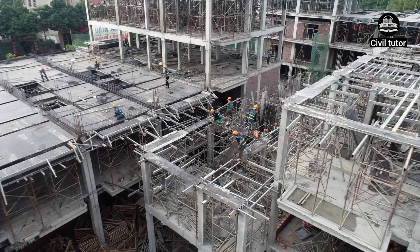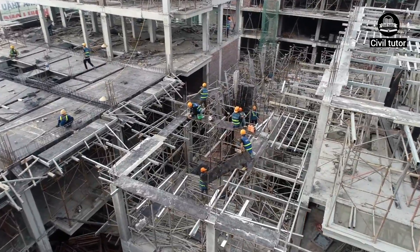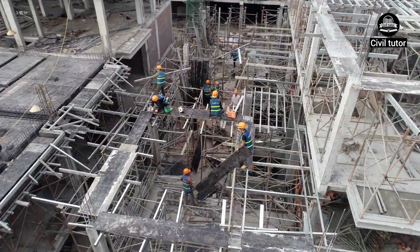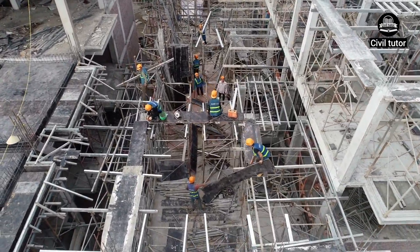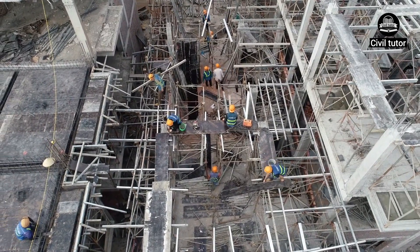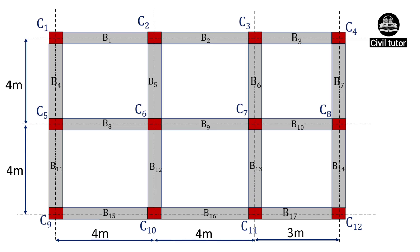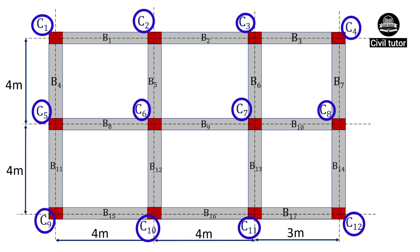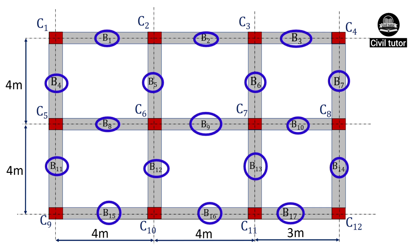Now let's discuss how to identify whether a column in a building is axially loaded, uniaxially loaded, or biaxially loaded, so that we can follow the design procedure accordingly. Let's consider a building frame with 12 columns numbered C1 to C12, connected by 17 beams numbered B1 to B17.